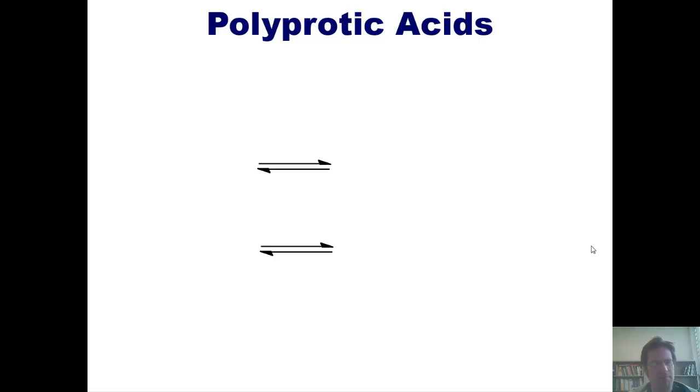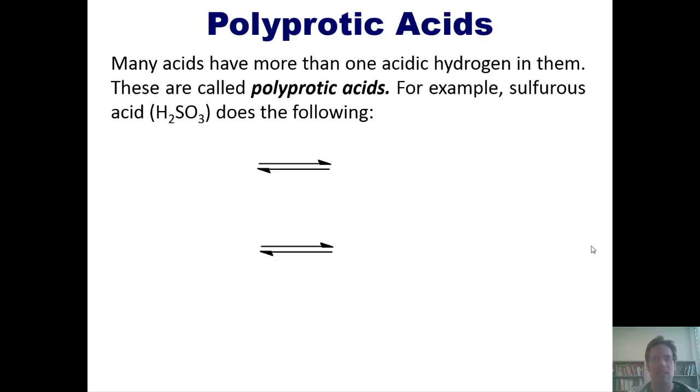Believe it or not, many acids, or some acids at least, have more than one acidic hydrogen in them. These are called polyprotic acids. For example, sulfurous acid, H2SO3, does the following. It has, of course, two acidic hydrogens here, so one of them can dissociate to form H+, leaving you with HSO3-, or hydrogen sulfite. This first equation has its own weak acid Ka, the one shown here.